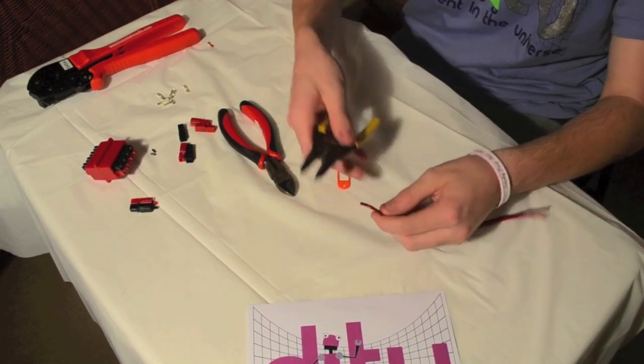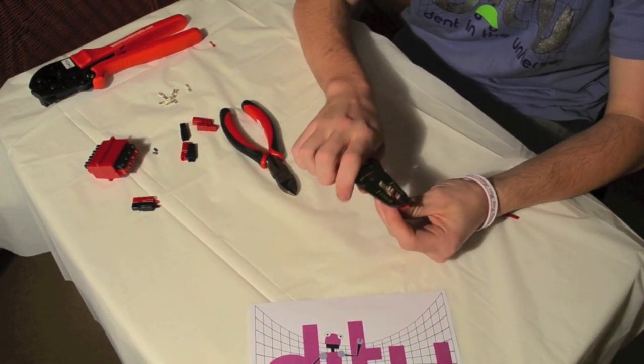Then strip about three sixteenths of an inch of the insulation off the wire.